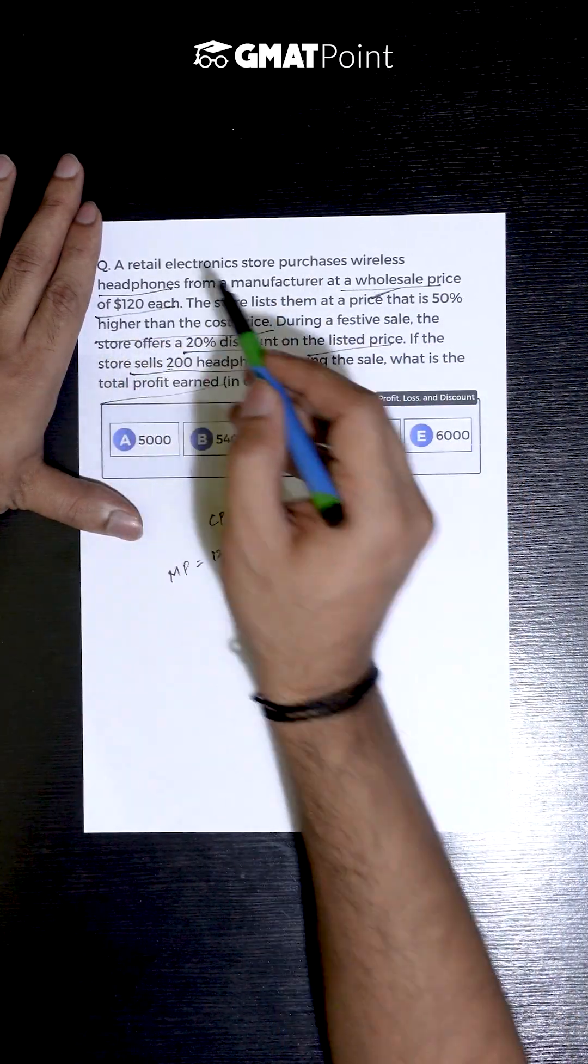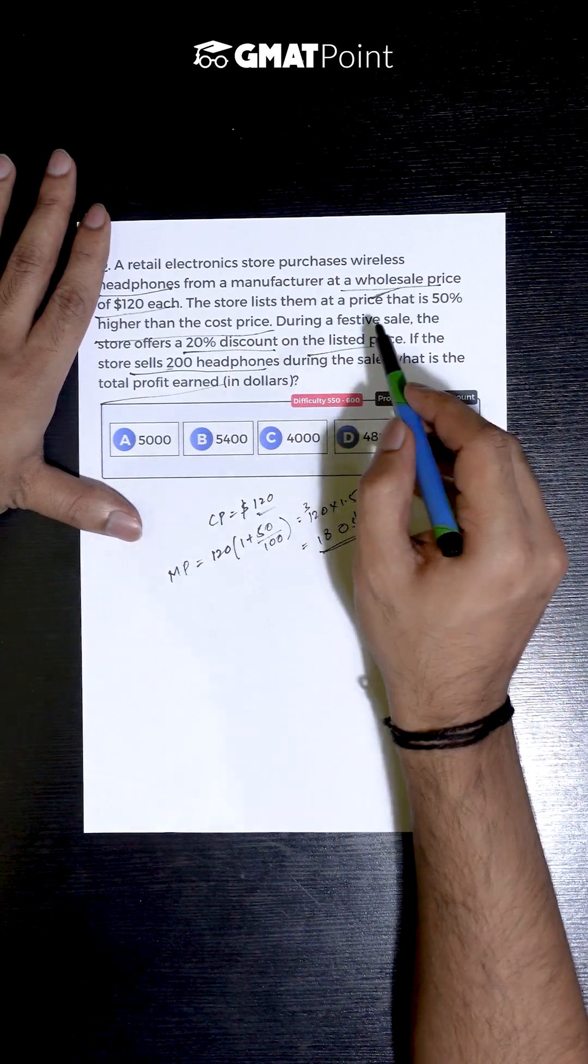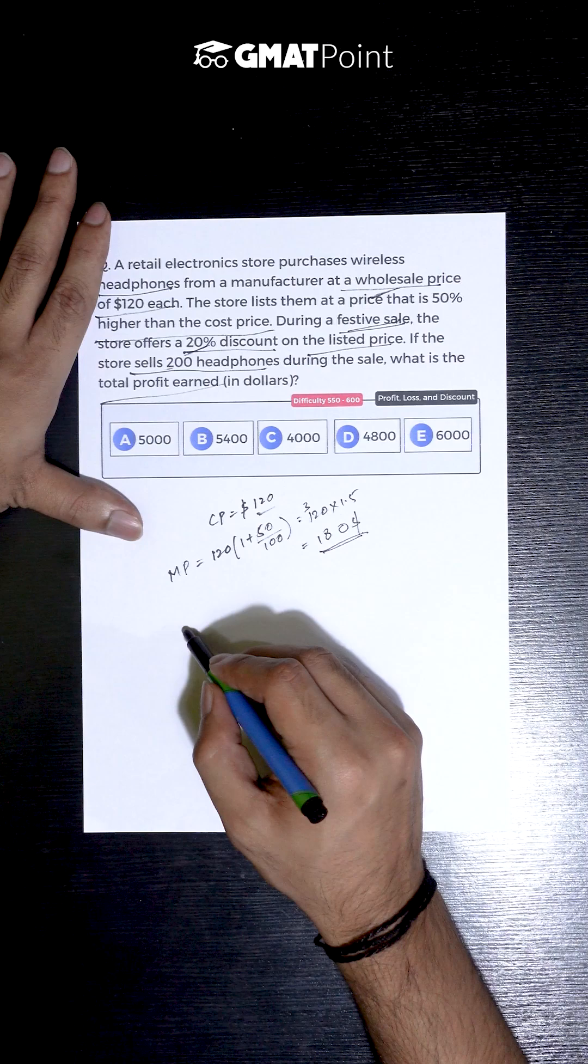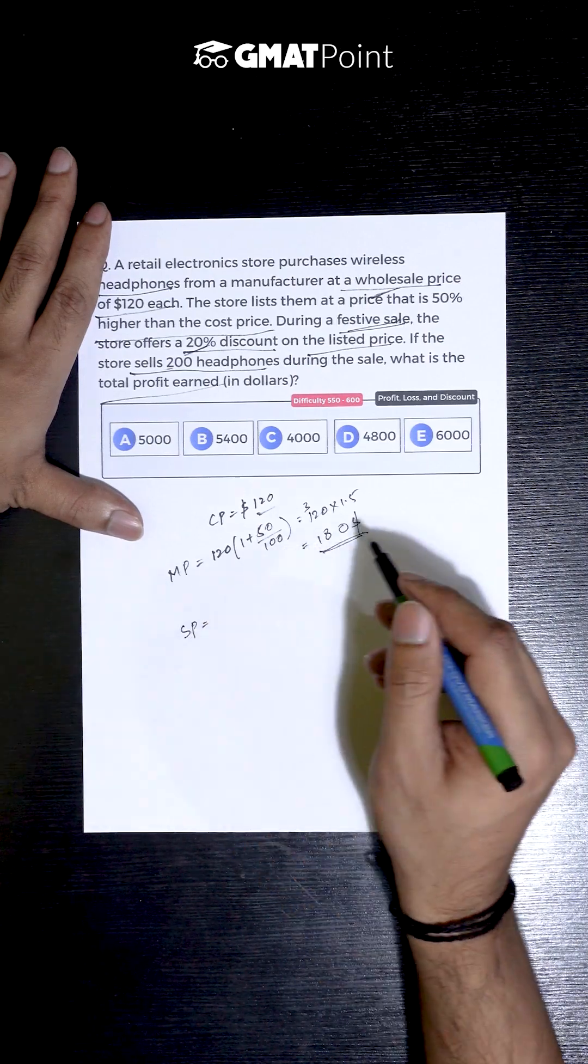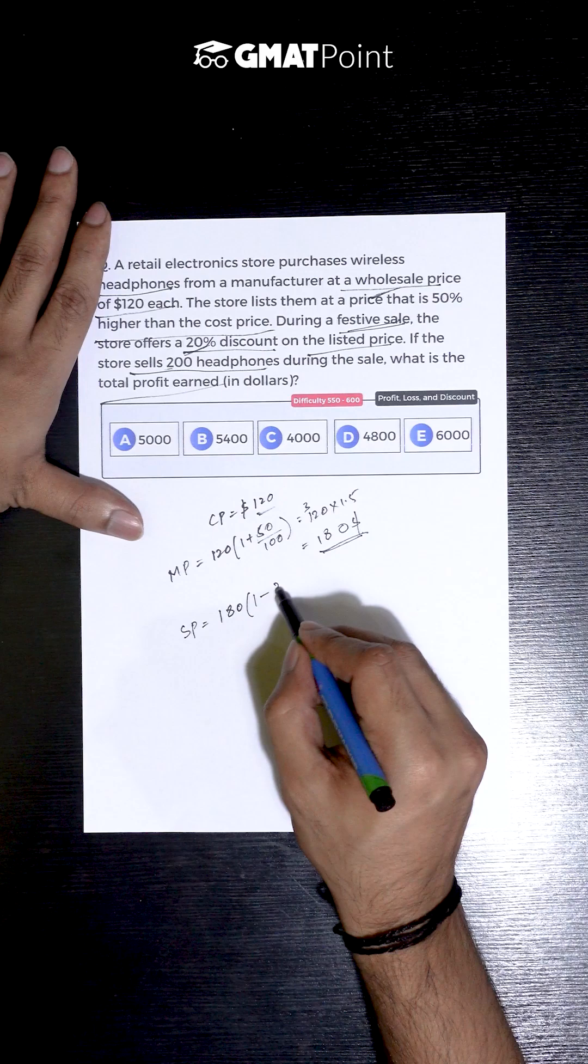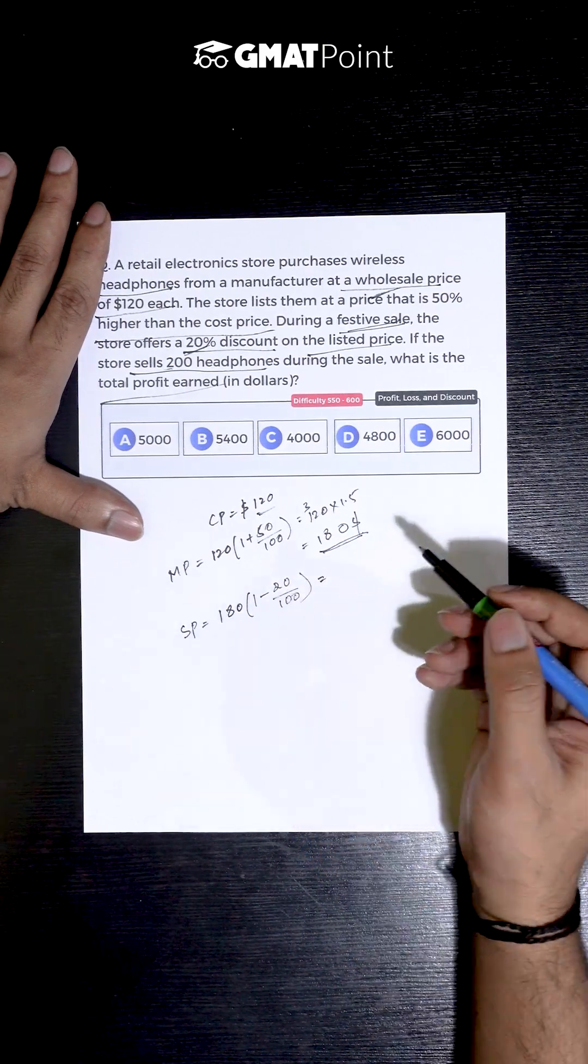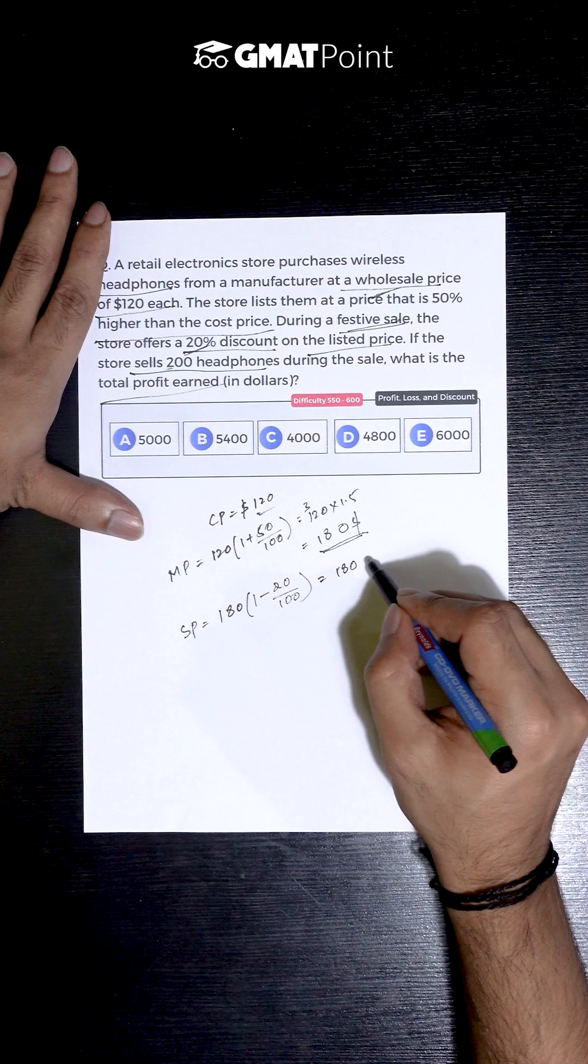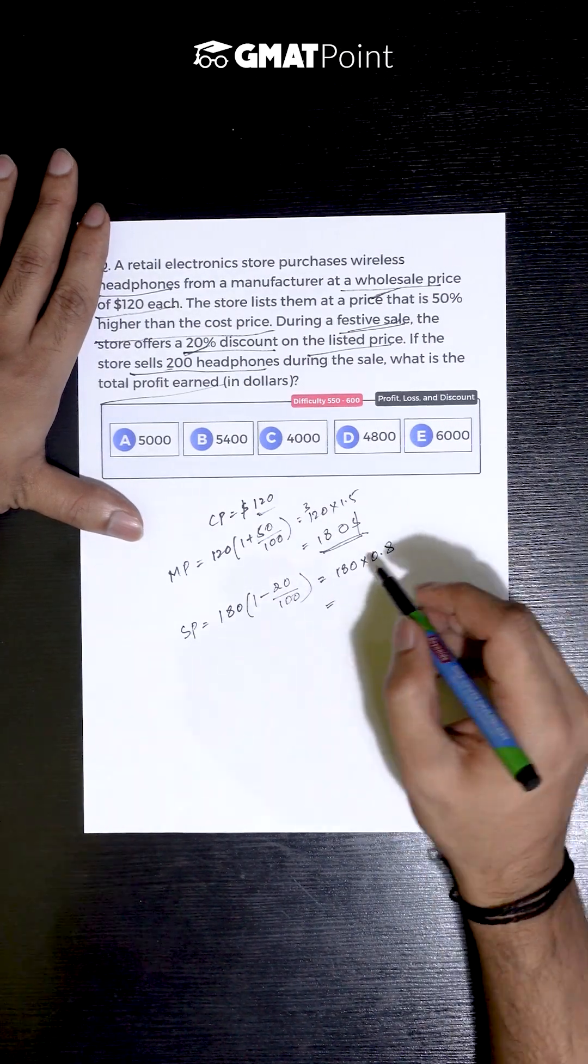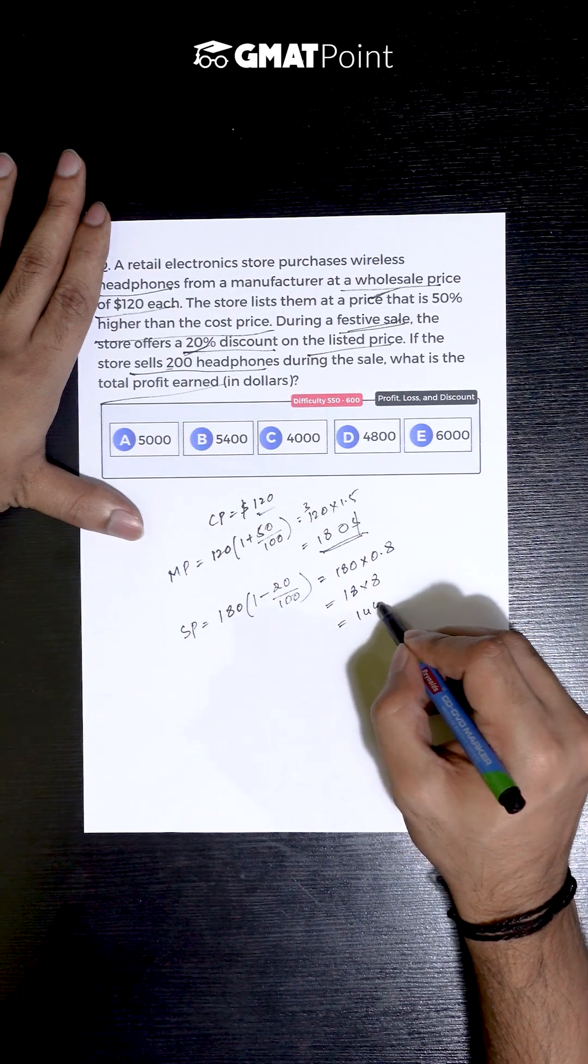So, each headphone is marked at $180 and we are told that during a festive sale, they are offering a discount of 20%. So, selling price of each headphone can be calculated as 180 × (1 - 20/100) because a discount of 20% is being given. The selling price can be calculated as 180 × 0.8 which is equal to 18 × 8, $144.